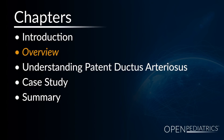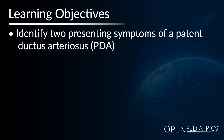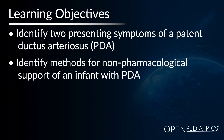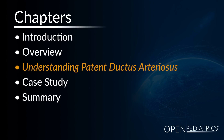By the end of this chapter, participants should be able to identify two presenting symptoms of patent ductus arteriosus, identify methods for non-pharmacological support of an infant with PDA, and identify methods for pharmacological treatment of an infant with a PDA.